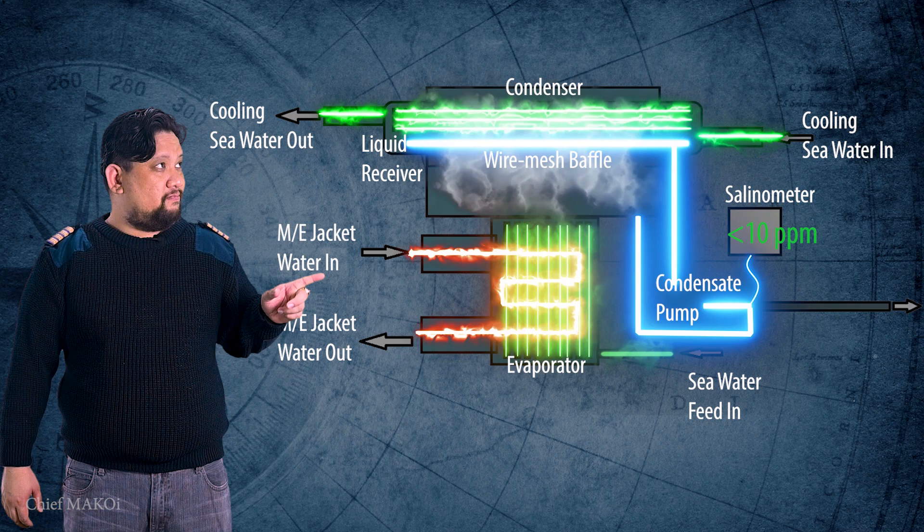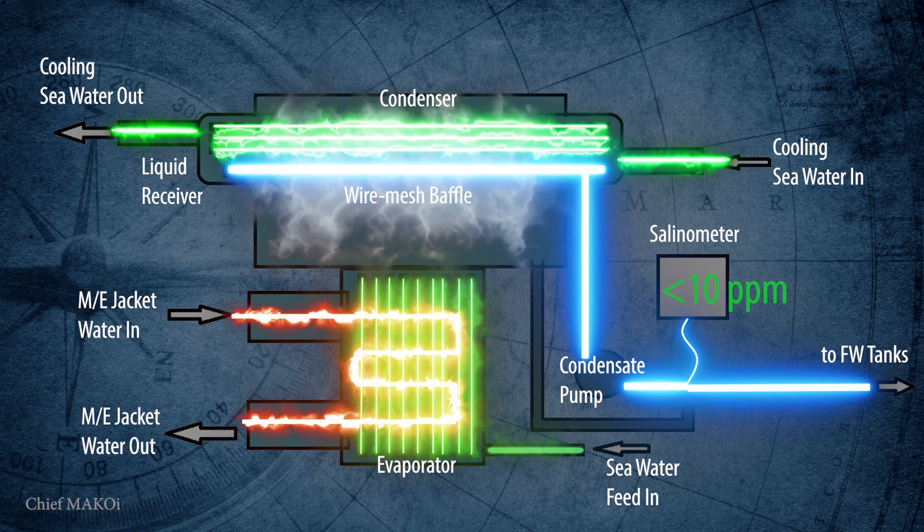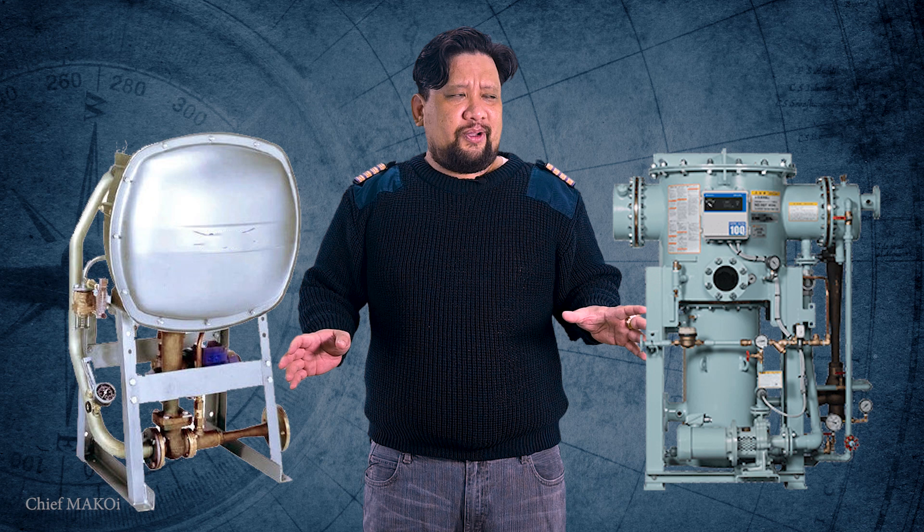As mentioned earlier, distillation plants are either tube type or plate type designs. I showed the tube type in my visual aids, but the principle of operation is exactly the same. I hope you enjoyed and learned something from this episode. We will have more topics to discuss in the future, but for now, class dismissed.